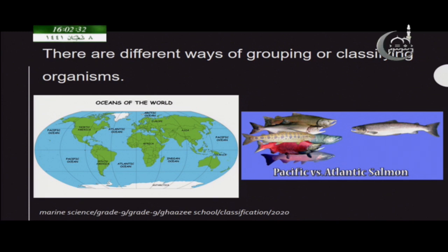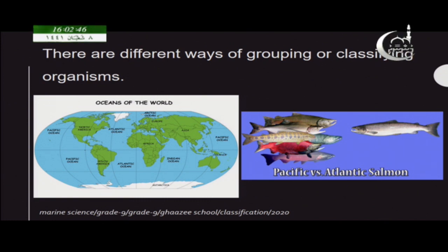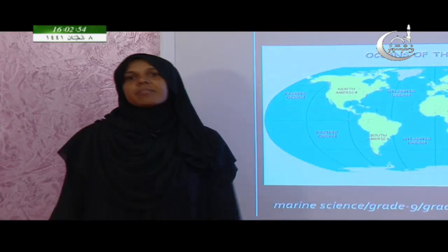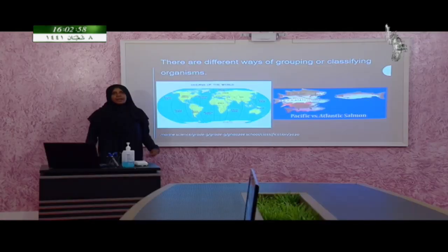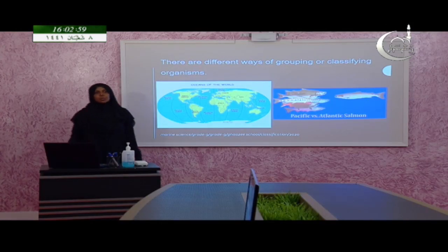Here I have taken examples from the marine environment. For example, if you look at some fish, there may be different types living in specific oceans — some in one ocean, others in the Atlantic Ocean. So you can divide fish according to the ocean where they are living. That is one way we can identify or group organisms.